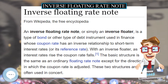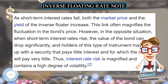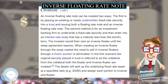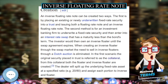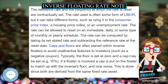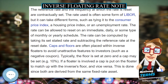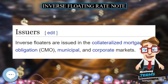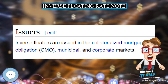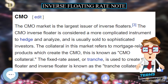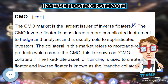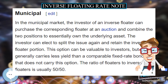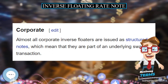Inverse floaters are issued in the collateralized mortgage obligation (CMO), municipal, and corporate markets. The CMO market is the largest issuer of inverse floaters. The CMO inverse floater is considered a more complicated instrument to hedge and analyze and is usually sold to sophisticated investors. The collateral in this market refers to mortgage-related products which create the CMO, known as CMO collateral. The fixed-rate asset or tranche used to create the floater and inverse floater is known as the tranche collateral.